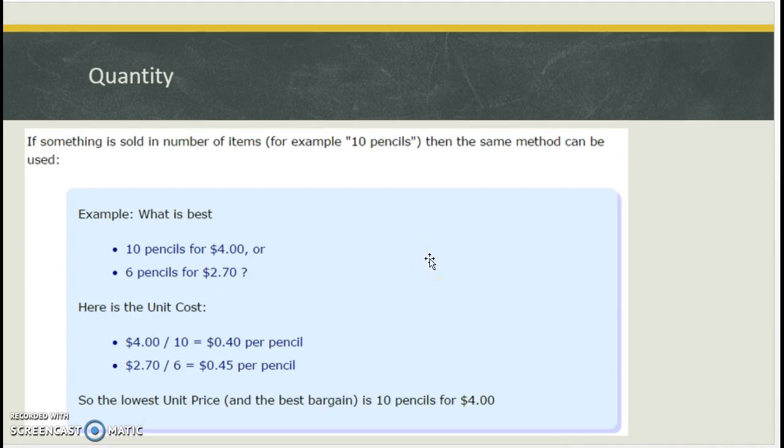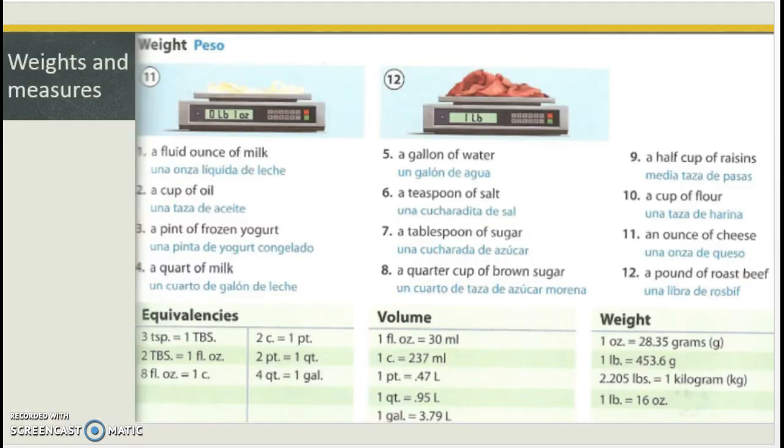Another one, 10 pencils for $4, $2.80. Six pencils for $2.70. So then we have to look at how many to buy pencils for your standardized tests. Here, it's cheaper to buy the larger amount.